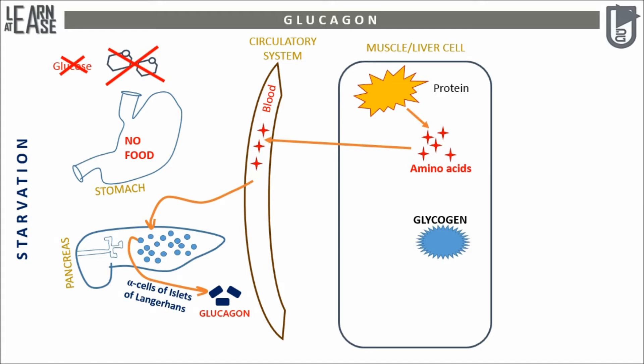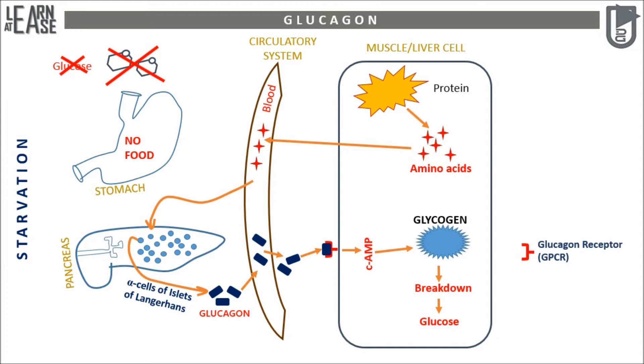This glucagon will enter the blood. The receptors of glucagon are located on liver and muscle cells, and they belong to the family of GPCR. I have prepared a video earlier on GPCR — you would find its link in the description for more details. Glucagon binds to GPCR and activates it to produce cyclic AMP, which is a second messenger. Cyclic AMP will induce a cascade of reactions to catabolize glycogen and produce energy under starvation. This is the basic outline of glucagon release and action.